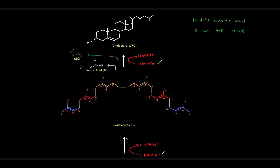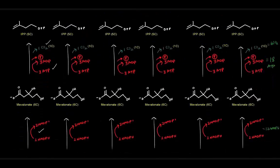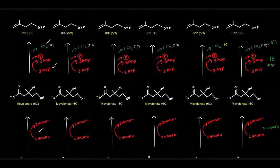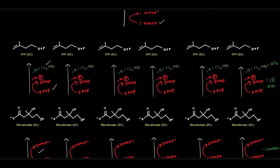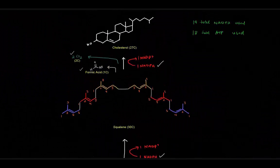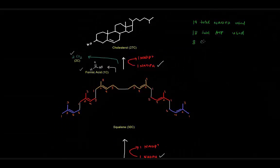And how many carbon dioxides were produced? We had six here, going from mevalonate to IPP, and then we lost two up here as well. So that's going to be—eight carbon dioxides produced.